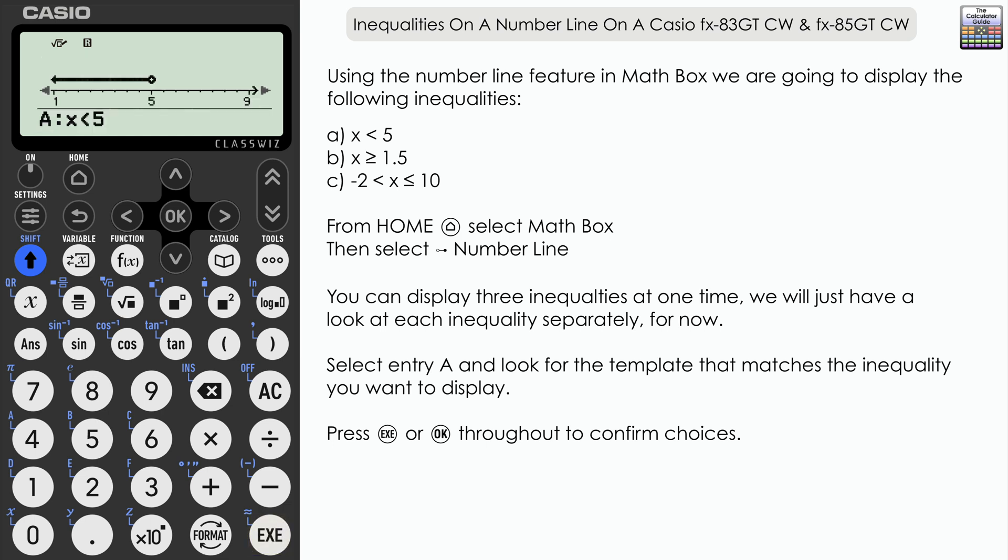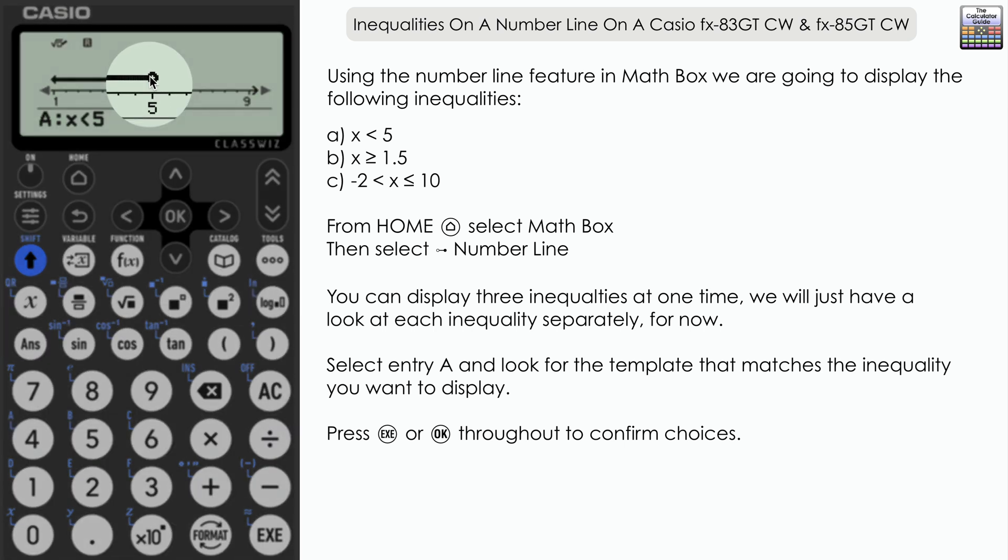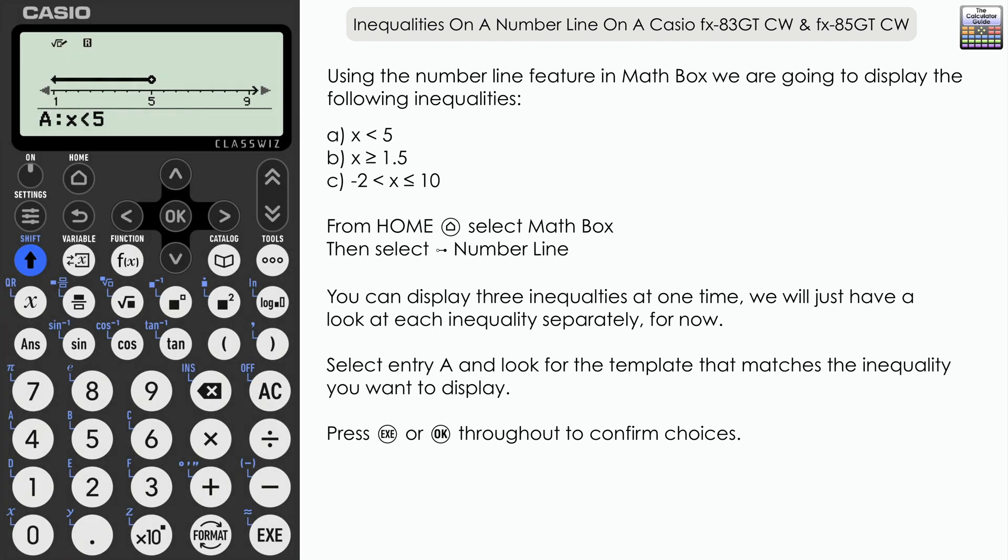And here we have the number line. So we can see there that we have 5 or less, and you can see that we have the hollow circle indicating that we don't actually include the value of 5, just all values less than that, and the arrow indicating down the number line there.